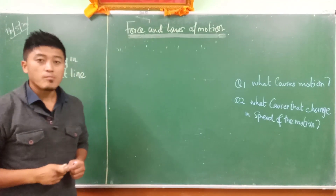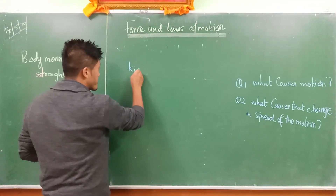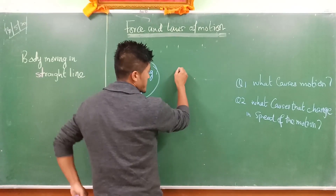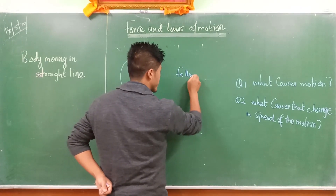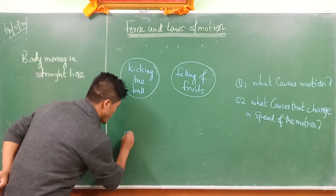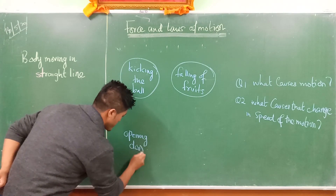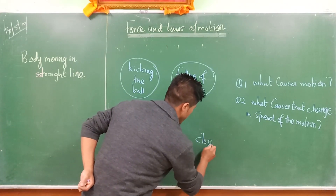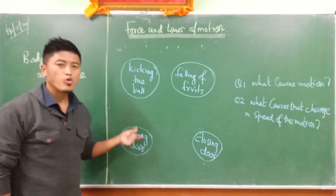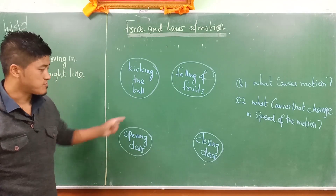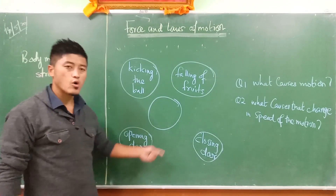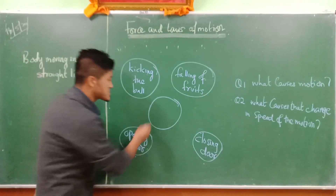In our daily life we come across many kinds of activities, like kicking a ball, falling of fruits, opening a door, closing a door. If I keep writing all these activities, this blackboard is not sufficient. We know that all these - falling of fruits, kicking the ball, opening and closing doors - are influenced by some external activity.